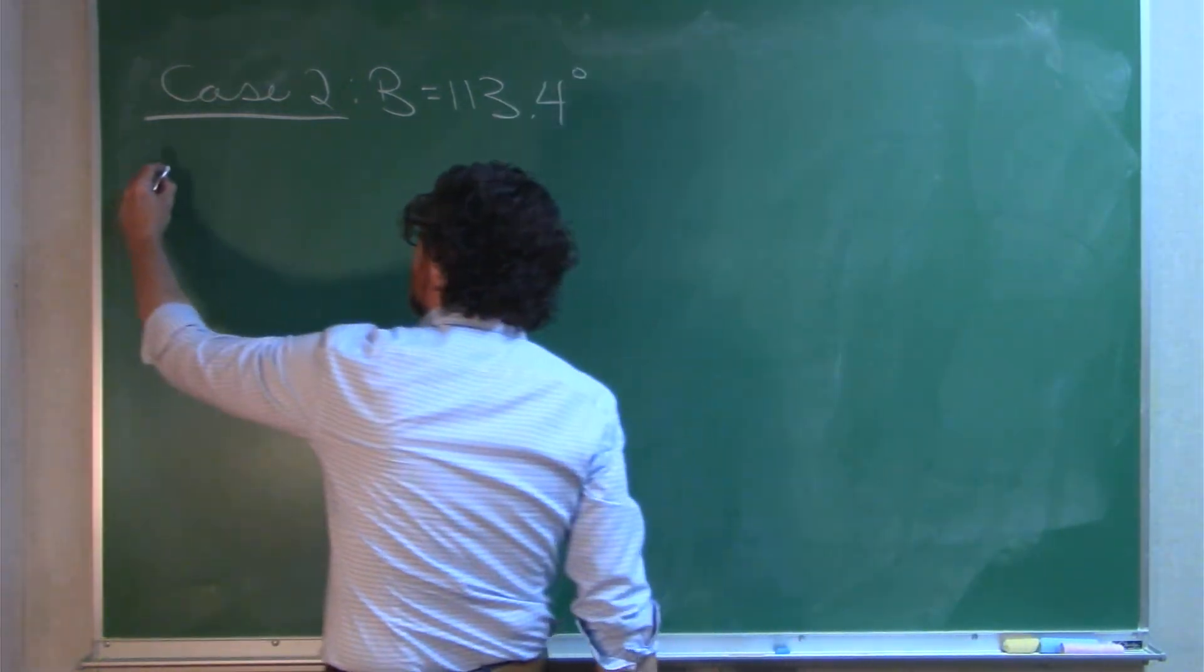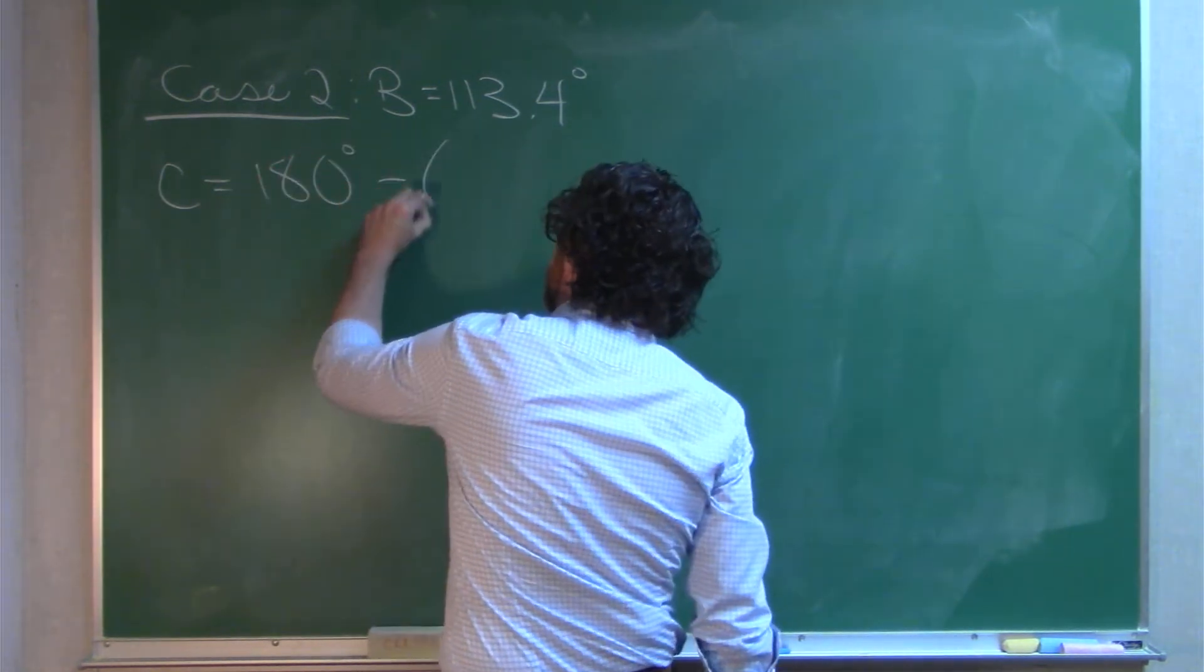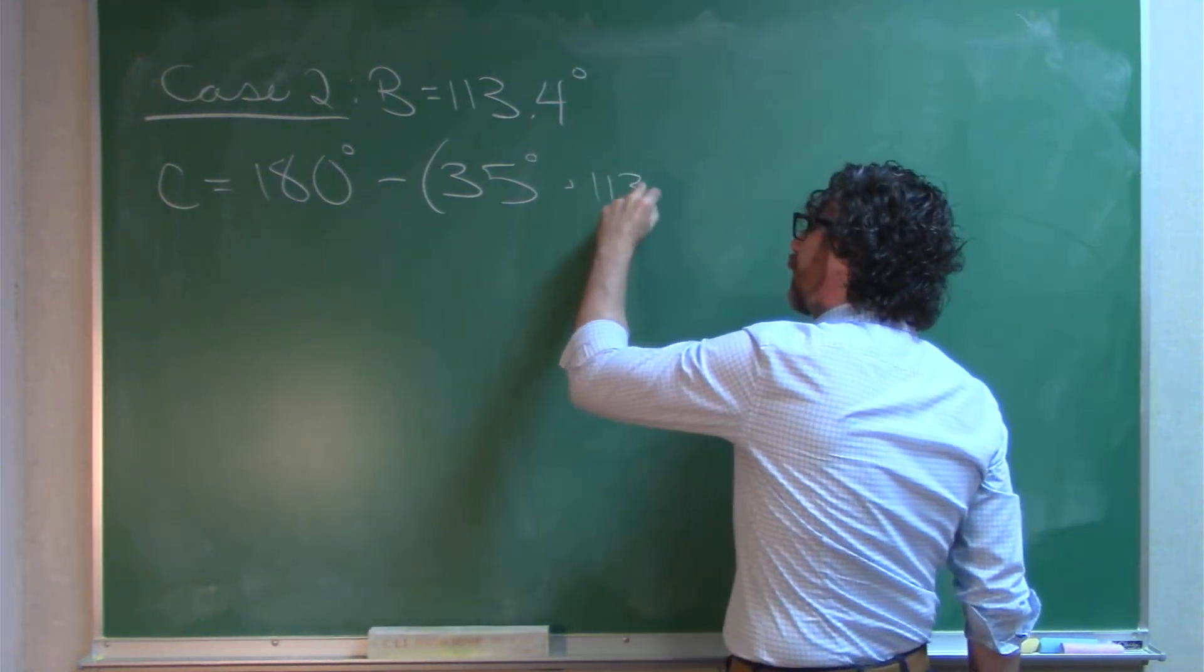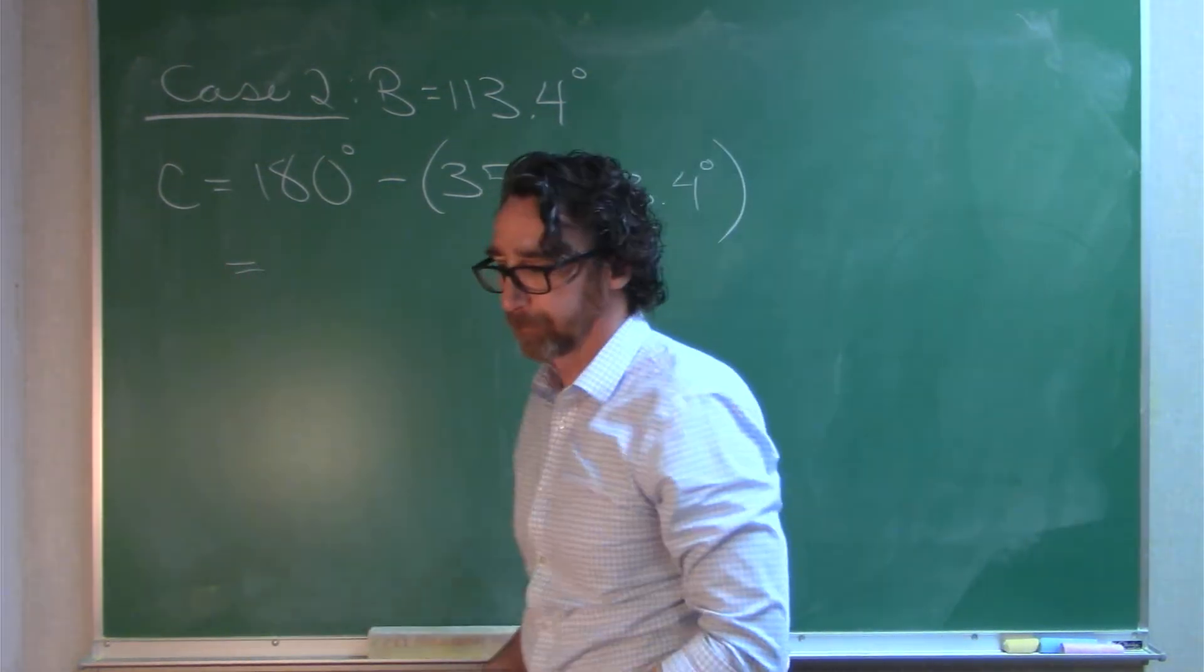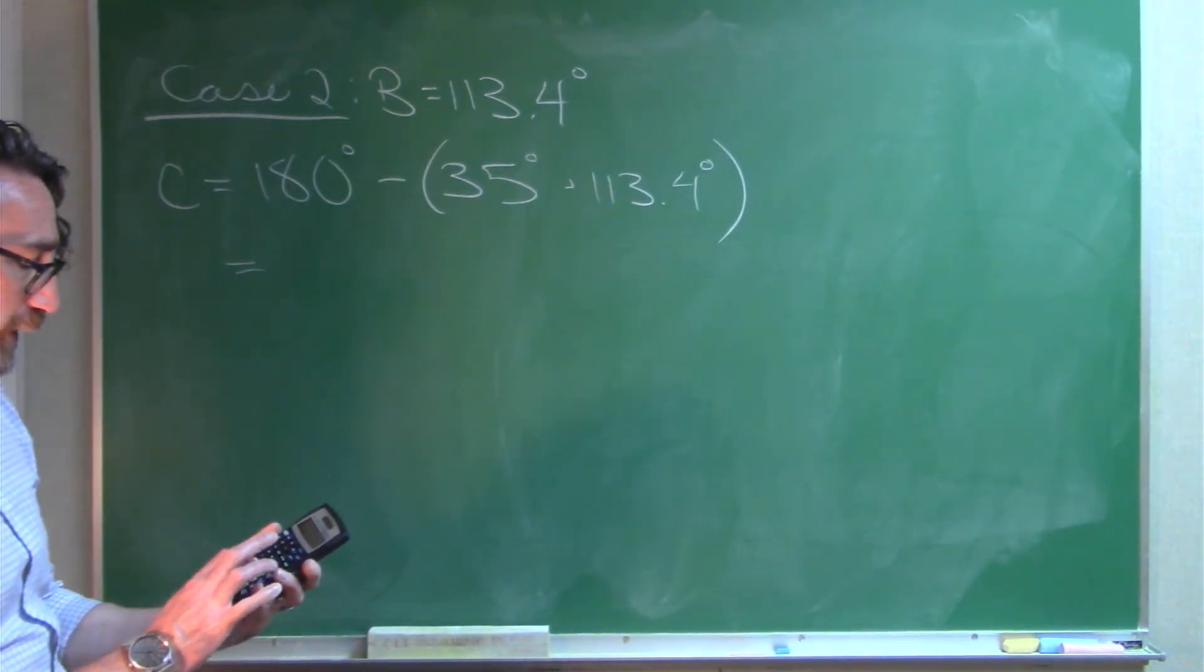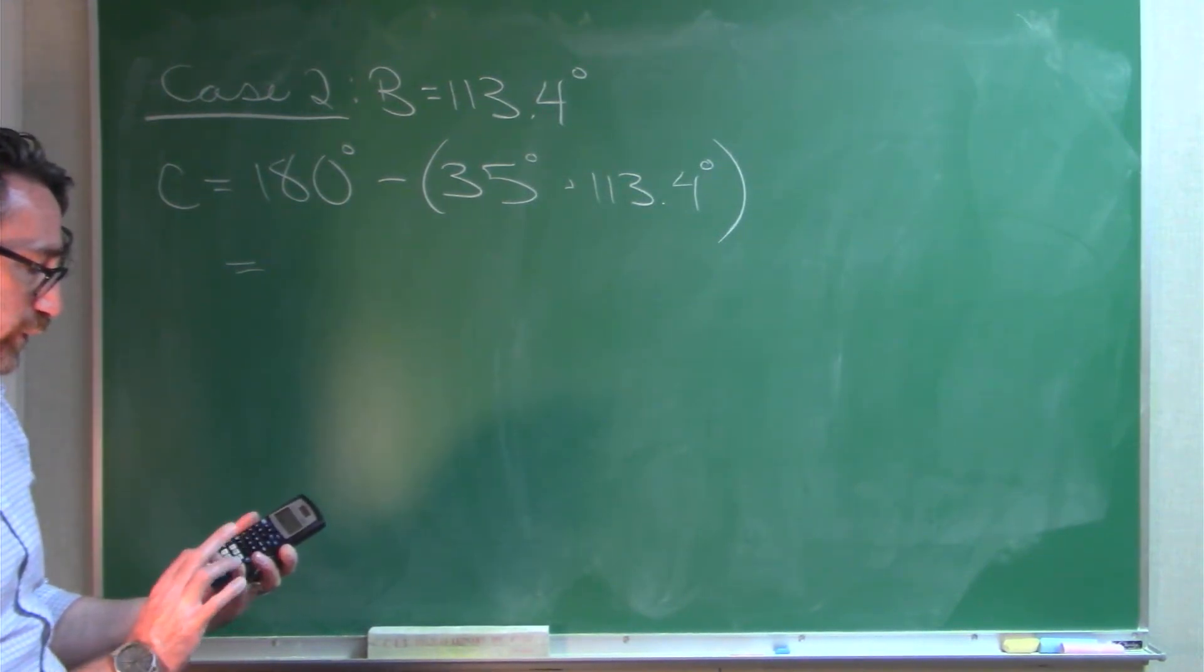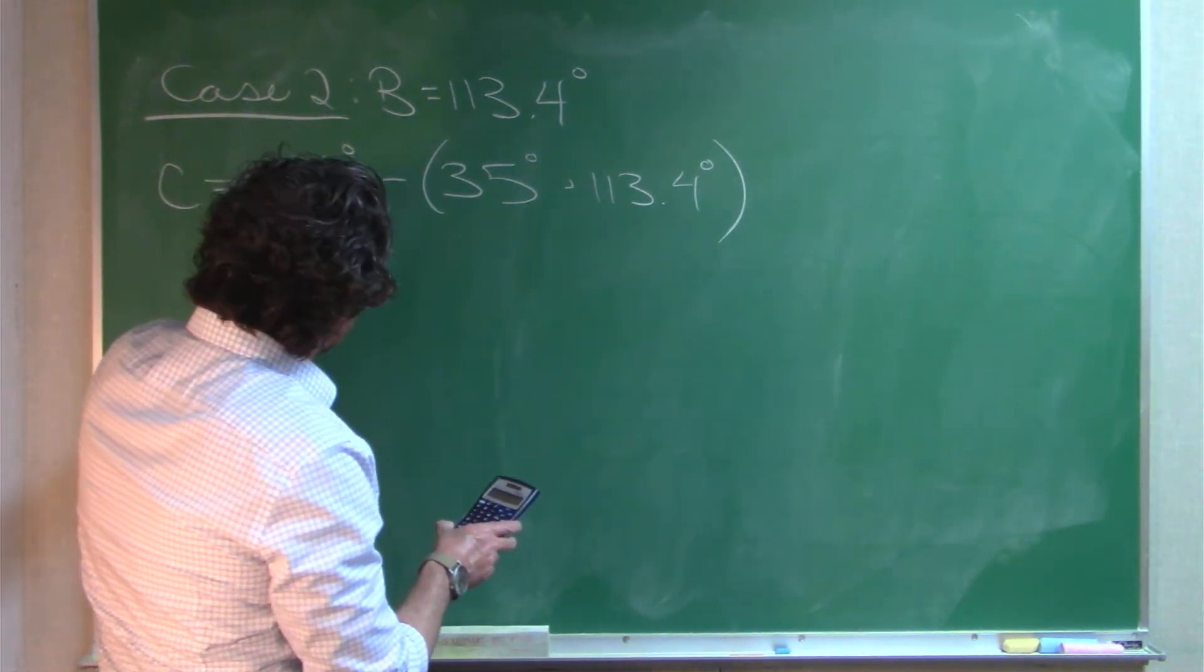So let's consider that case. We're going to do the same exact thing. We're going to find angle C using some arithmetic. All right, let me do some number crunching here. 180 minus, open up parentheses, 35 plus 113.4, close parentheses. So C is 31.6 degrees.